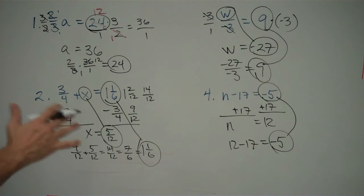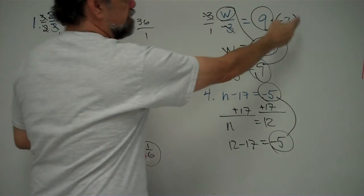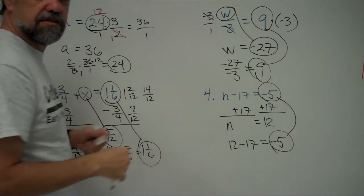So, basically, what you've got to do is, you have to look at what's happening to the unknown, you have to do the inverse operation, and then whatever you do to one side of the equation, you have to do the other side of the equation. And you're all set with one-step equations.